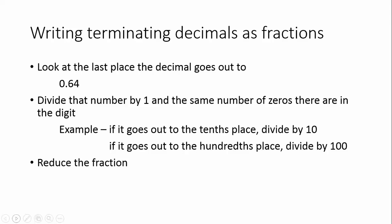Next, we're going to talk about how to write terminating decimals as fractions. You do need to make sure that this goes into your notebook and that you've written these steps down. So when you're writing a terminating decimal, the first thing you need to do is look at the last place the decimal goes out to. So for example, in 0.64, the last digit is in the hundredths place. So then you're going to take that 64 and divide it by 1 and the same number of zeros that there are in the digit. So in this case, there are two digits after the decimal, so we're going to divide it by 1 and two zeros, or a 100.